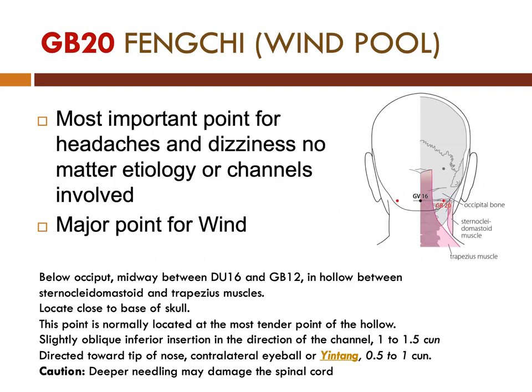The first point to use is GB20, the Wind Pool acupuncture point. It is the most important point for headaches and dizziness, no matter what etiology or channels are involved. It is the major point for wind. To locate this point: below the occiput, midway between GV16 and GB12, in the hollow between the sternocleidomastoid and trapezius muscles, close to the base of the skull.